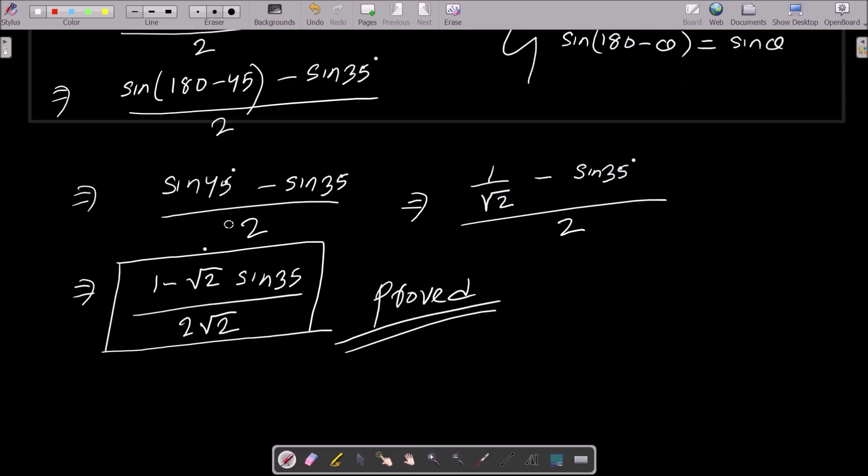There 1 is hidden. So take the LCM, that comes root 2. So root 2 is the LCM. Then here that comes 1 minus and there root multiply root sin 35 divided by 2. Then after this 2 multiply with root 2, that comes 2 root 2. So 1 minus root 2 sin 35 divided by 2 root 2.